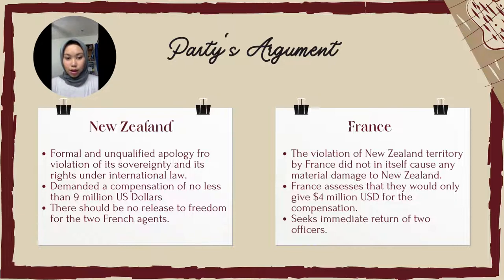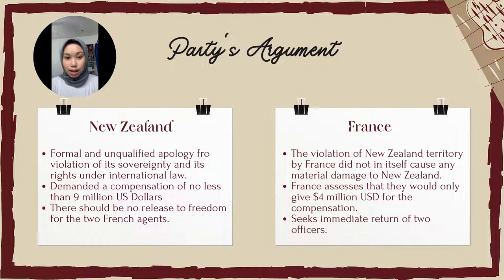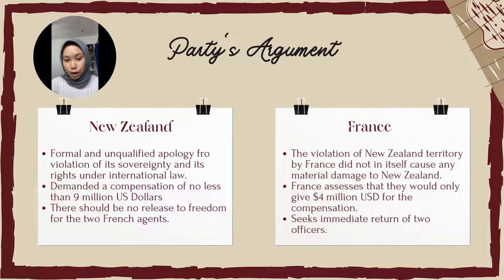The Secretary General's ruling, given in 1986, required France to pay US$7 million to New Zealand and undertook not to take certain measures injurious to New Zealand's trade with the European Communities. The two states concluded an agreement in the form of an exchange of letters on 9 July 1986 — the first agreement — which provided for the implementation of the ruling. Under the terms of the first agreement, Major Maffard and Captain Pryor were to be transferred to a French military facility on the island of Hao for a period of not less than three years, and were prohibited from leaving the island for any reason except with the mutual consent of the two governments.